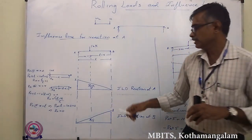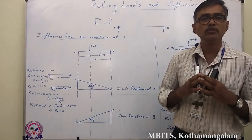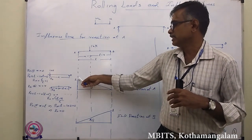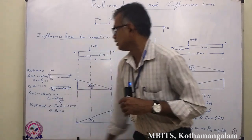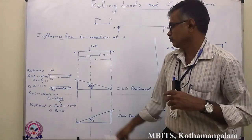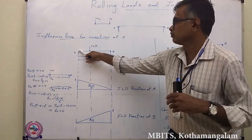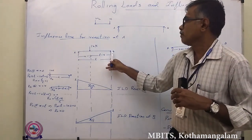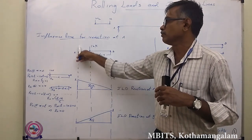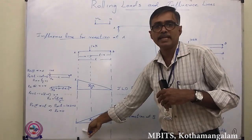Now we draw the influence line diagram for reaction at B. Again, we move a unit load of 1 kN from end A to end B. When the load is at A, taking moment about A: −RB × L + 1 × 0 = 0, giving RB = 0. The ordinate of the influence line diagram at A is therefore zero.